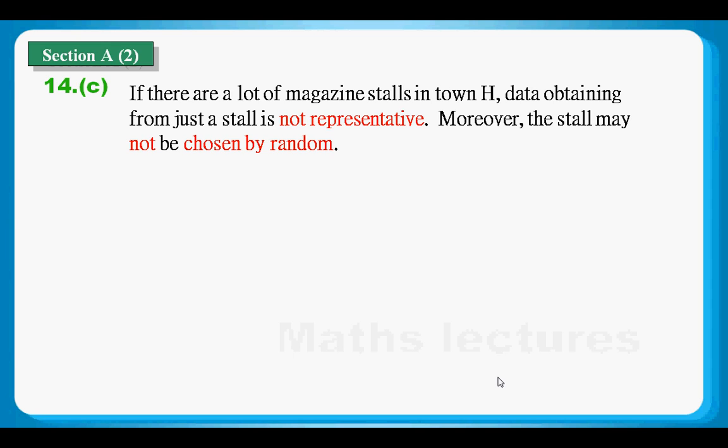If I want to reject this claim, I would say that if there are a lot of magazine stores in town H, data obtaining from just a store is not representative. Moreover, the store may not be chosen by random. So I cannot accept this claim. The claim is rejected.